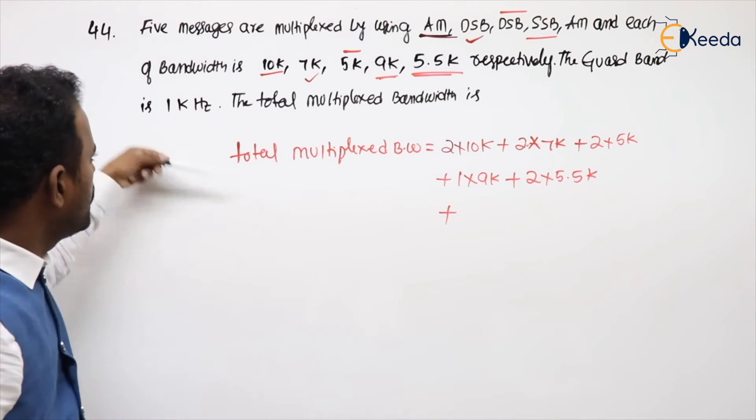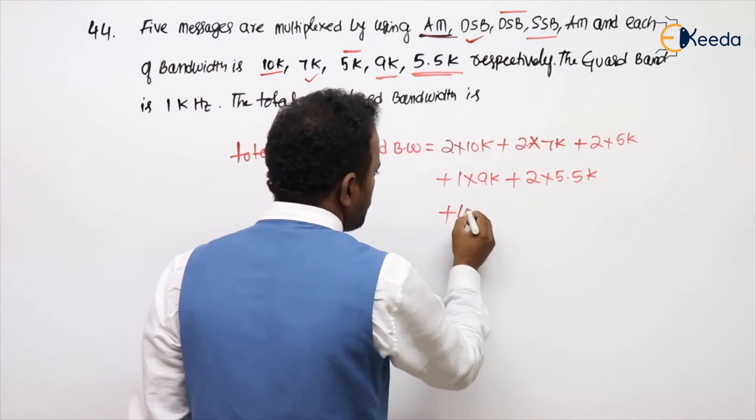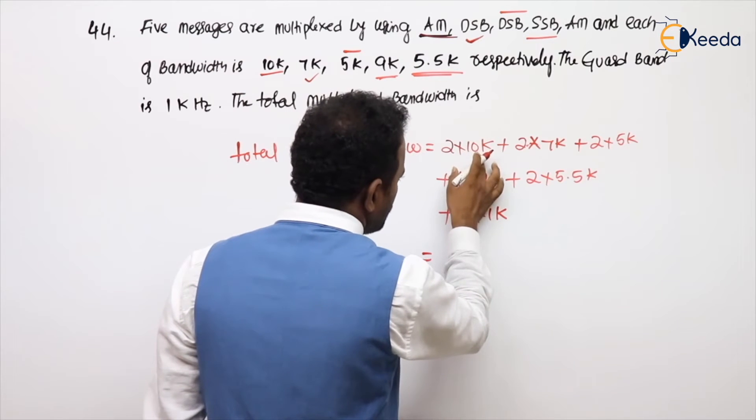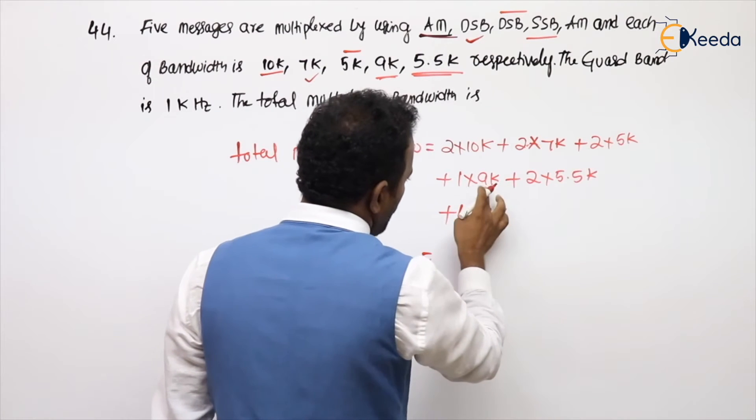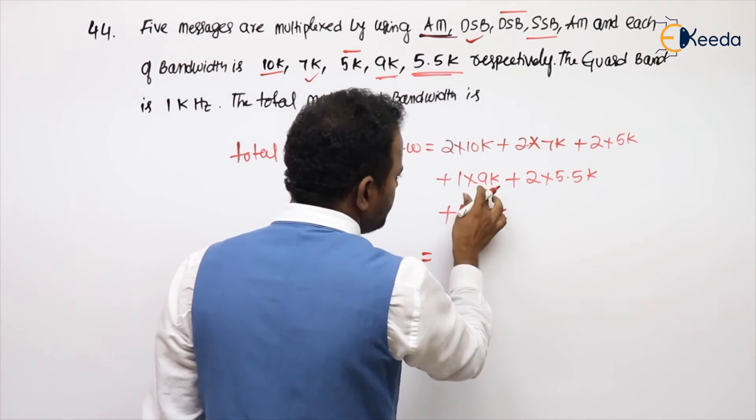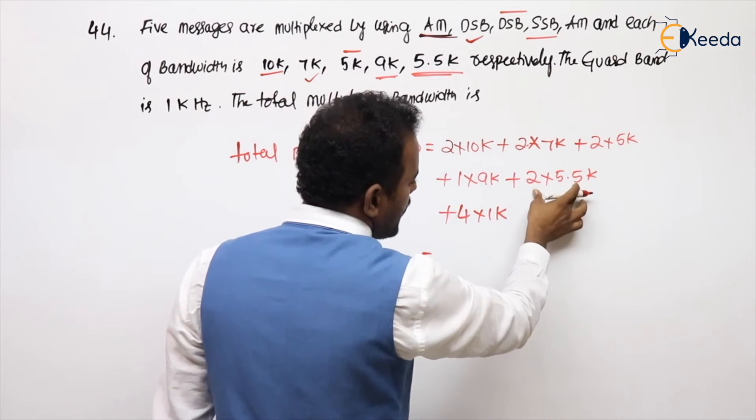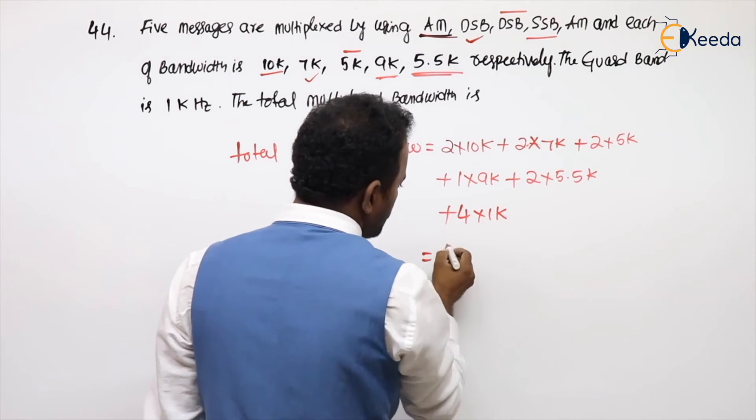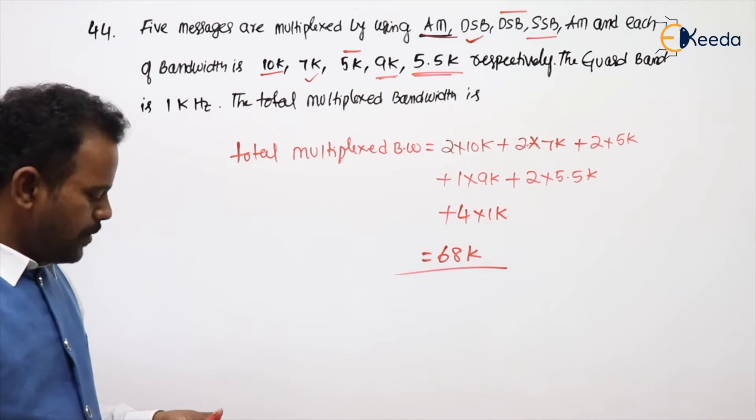Plus guard band, because guard band is mentioned. Guard band is 1K, and 5 messages means 5 minus 1, 4 guard bands, so 4 into 1K. Calculate: 20 plus 14 is 34, plus 10 is 44, plus 9 is 53, plus 11 is 64, plus 4 is 68. Got my point? That is the total multiplexed bandwidth.